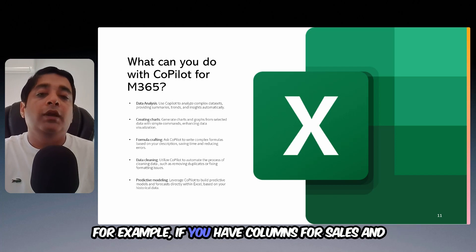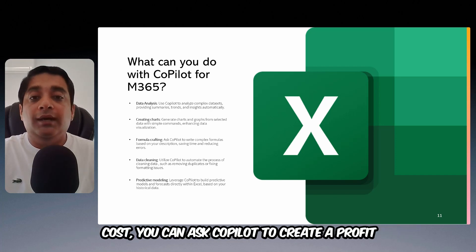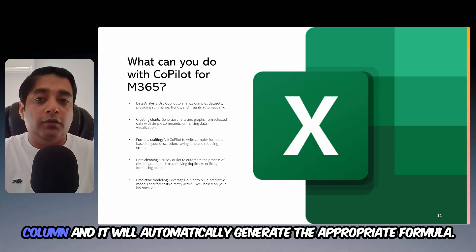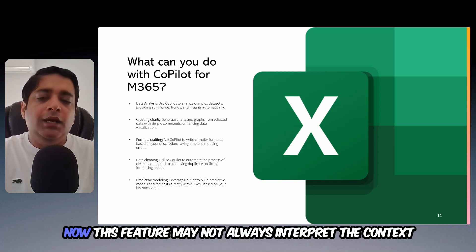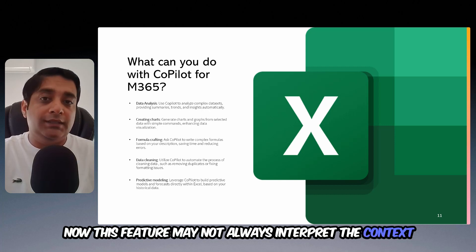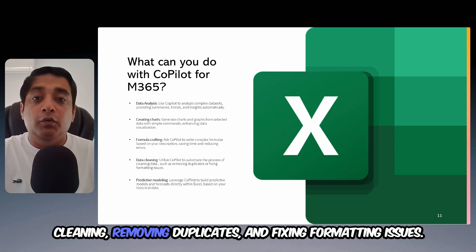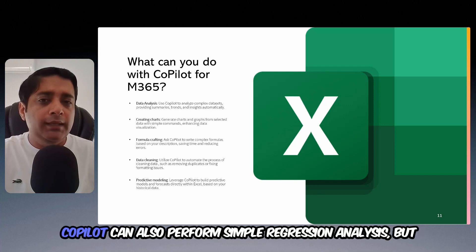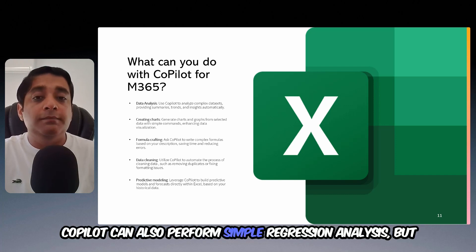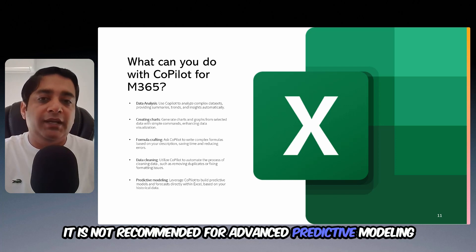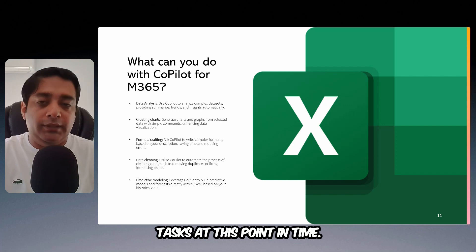For example, if you have columns for sales and cost, you can ask Copilot to create a profit column and it will automatically generate the appropriate formula. This feature may not always interpret the context correctly, but it is a useful tool for data cleaning, removing duplicates and fixing formatting issues. Copilot can also perform simple regression analysis, but it is not recommended for advanced predictive modeling tasks at this point in time.